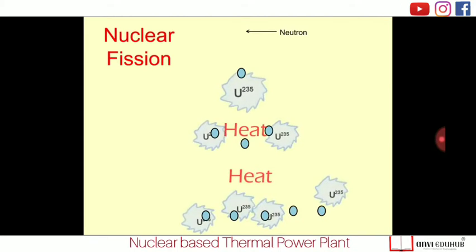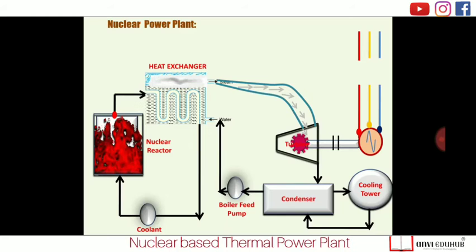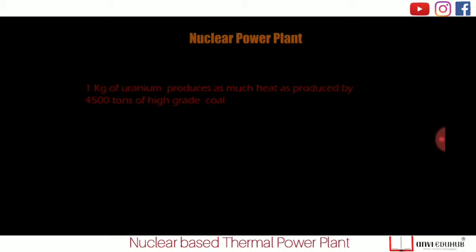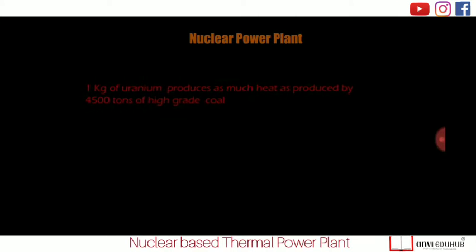When this chain reaction continues, it generates a huge amount of heat and develops huge pressure. If we control the chain reaction, we can harness that heat and use it to convert water into steam. That is the basic principle of a nuclear power plant. One key advantage: one kilogram of uranium produces as much heat as 4,500 tons of high-grade coal, which greatly reduces transportation costs.